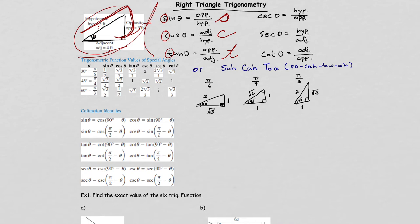For 45 degrees or pi over 4: sine is 1 over square root of 2, cosine is 1 over square root of 2, and tangent is 1 over 1. And same thing for pi over 3 — you can read off sine, cosine, and tangent values directly from that triangle.